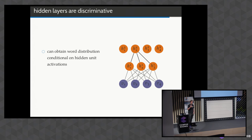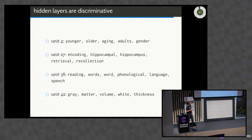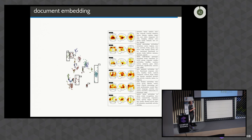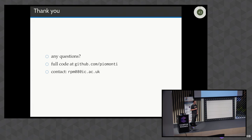The cool thing about these models is that the hidden layers are discriminative — you can actually interpret what the model is learning in a totally unsupervised way. In our case, the hidden layers were picking up on topics in the literature. We activated just one hidden unit at a time and set all others to zero, then worked back down the Boltzmann machine. The units are specific to very specific topics: for example, unit 4 relates to age, unit 38 relates to reading, phonological, or language tasks. Finally, we get the picture shown at the beginning — each document clustered and representing task-specific groupings. That's all I have. Thank you for listening.